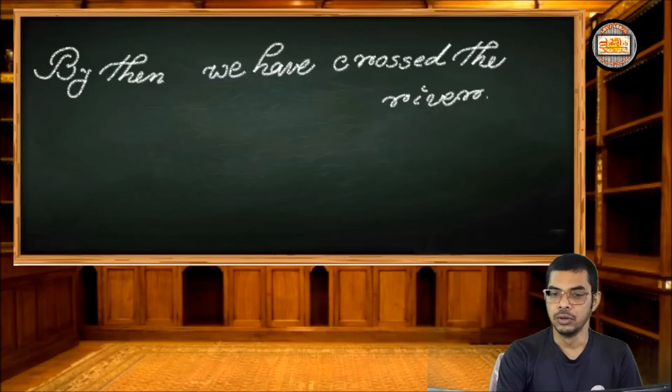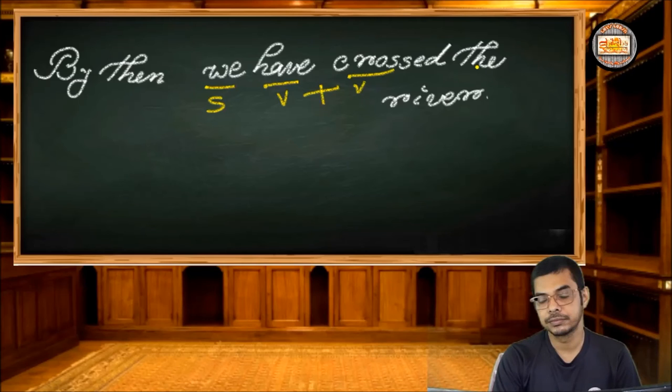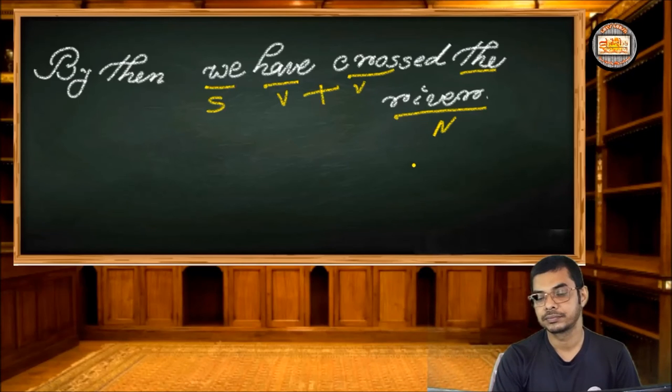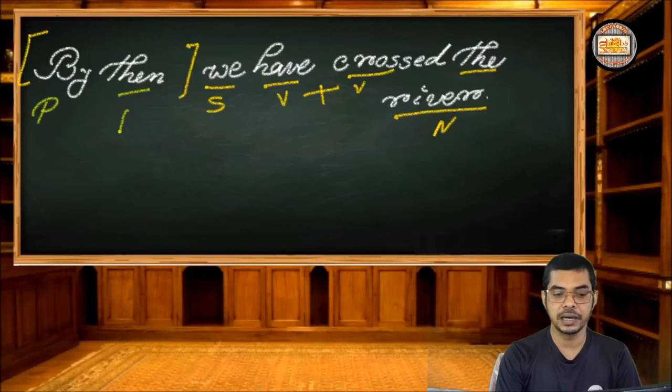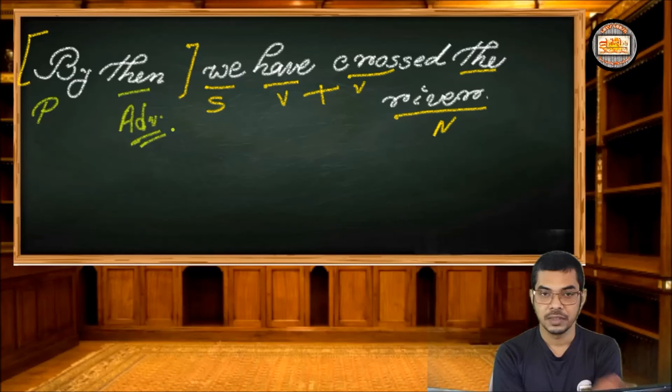Now have a look at this sentence. Look at this sentence very keenly. We, subject, have, crossed, verb, the river, noun. And we have left this part. By then. And in this by then, we'll get a preposition and then an adverb. By then.